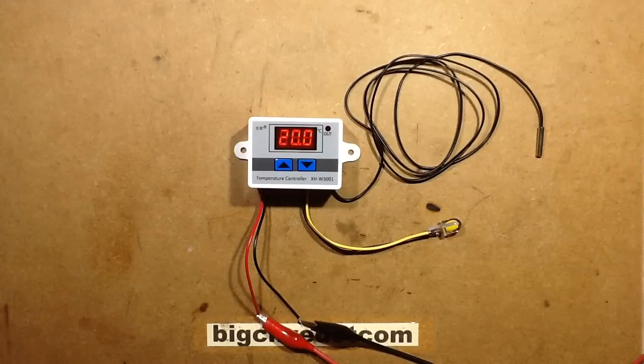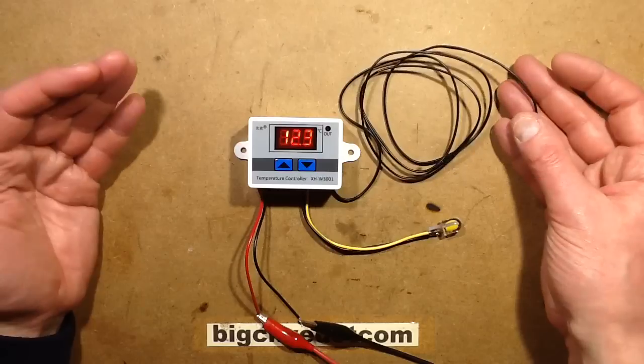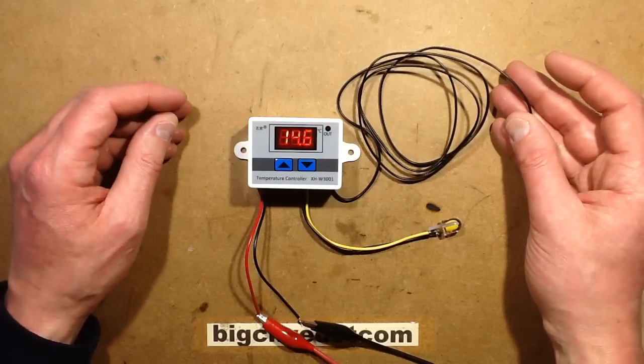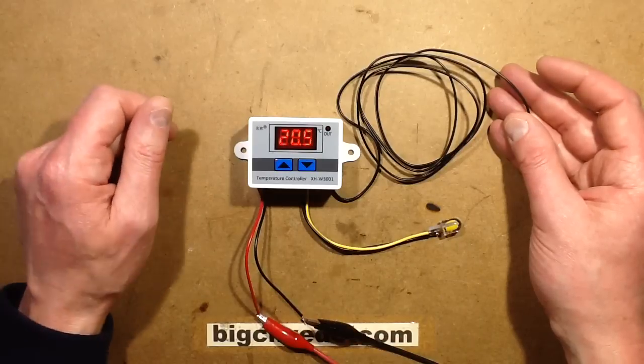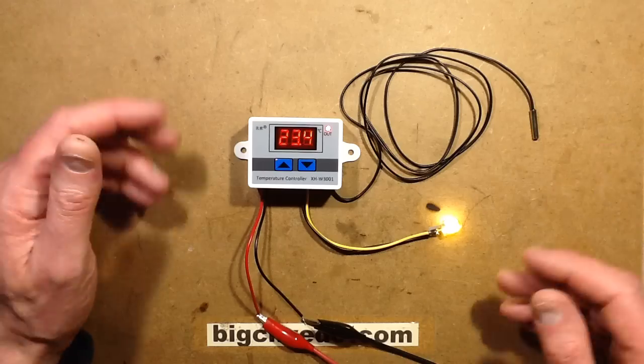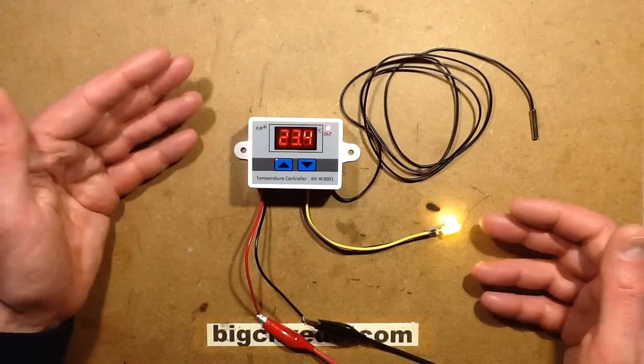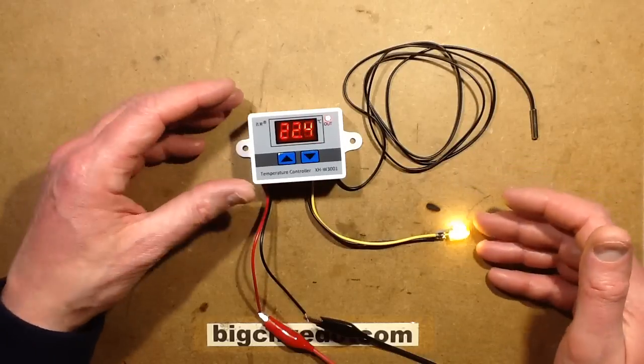So at the moment it's too cold for it to turn on the cooling. So I'm going to heat it up with my hand, and as soon as it gets up to 22 you'll see the little light come on. There we go, it's up above 22, so effectively it's turned on the cooling. This could be running a fan or it could be running a refrigeration unit.